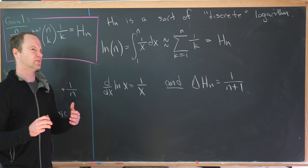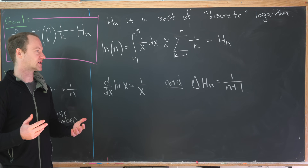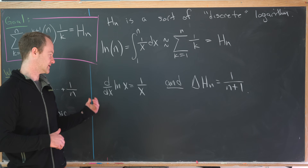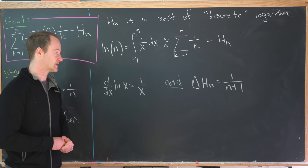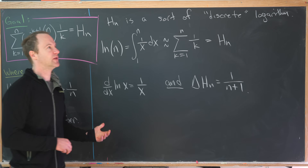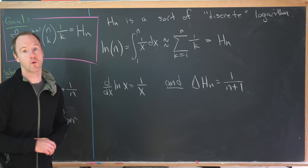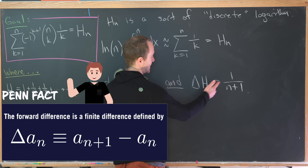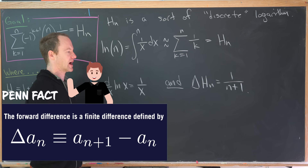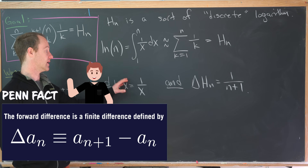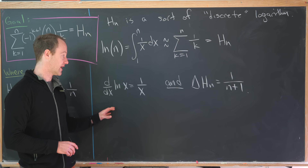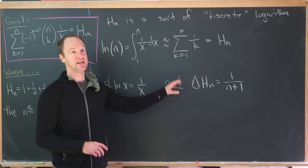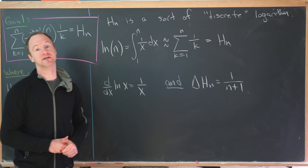The quality of that approximation depends on n. Another interesting point: the derivative of ln(x) with respect to x is 1/x, and the discrete derivative — or forward difference operator — applied to H_n is 1/(n+1). This gives a duality between the continuous logarithm and the sequence of harmonic numbers.